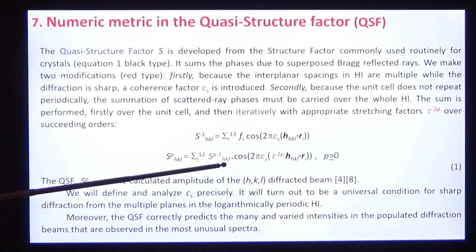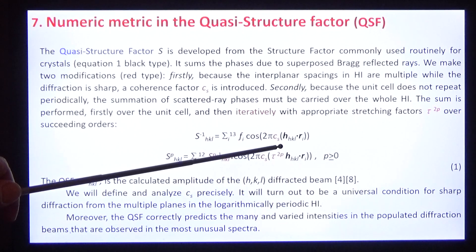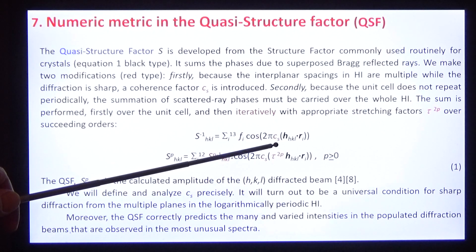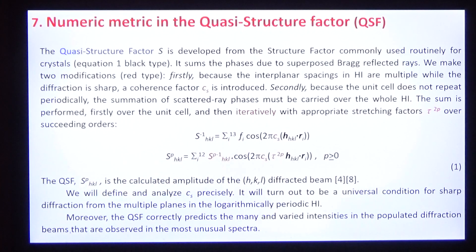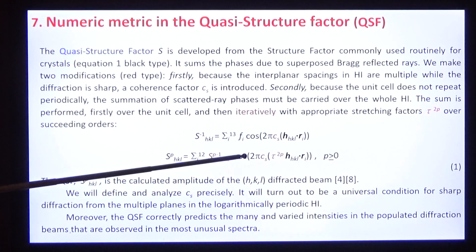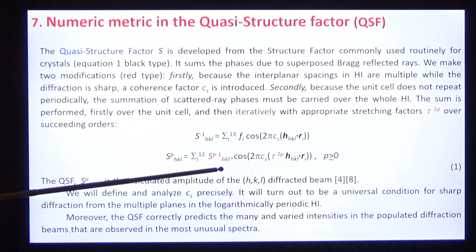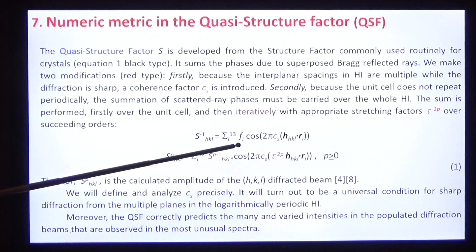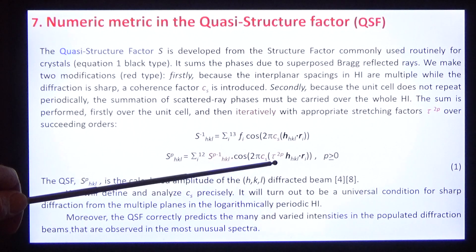In quasicrystals, we make two adjustments. Firstly, because we have sharp diffraction from multiple interplanar spacings, we include a coherence factor, which we're going to derive in detail. Secondly, because our unit cells are not periodically repeating, we have to sum over the whole quasicrystal, and we have to use an iterative procedure. The structure factor QSF for a supercluster order P is the structure factor for a subcluster P-1 multiplied by a function which gives the phase change due to a stretching factor tau to the P.